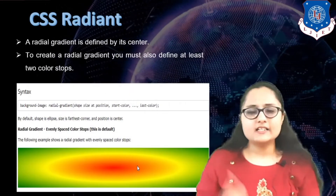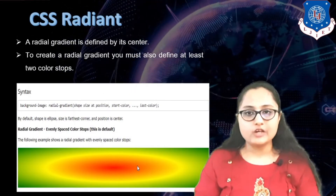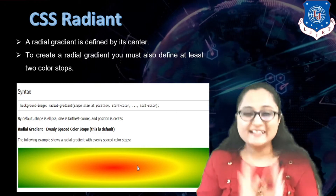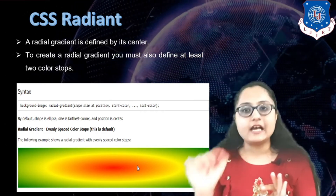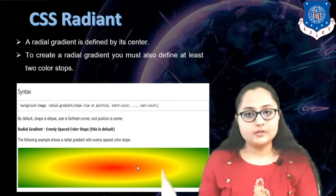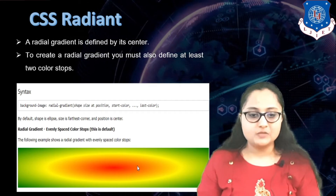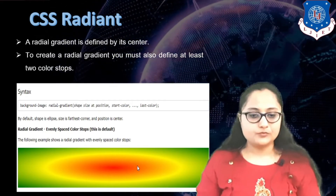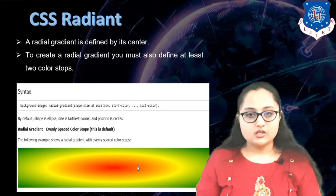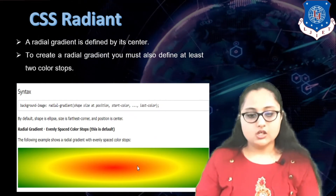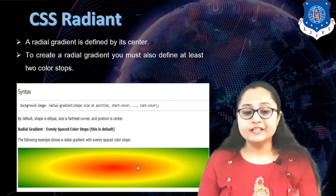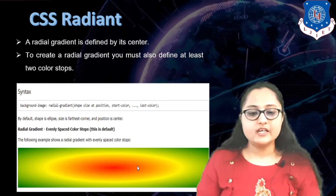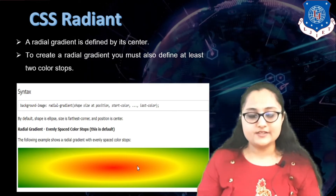Here you can see the syntax. The property name is background-image. Instead of writing Linear-Gradient inside the property value, it is replaced by Radial-Gradient. Inside that there are multiple parameters you can specify: the first is shape, the second is size, then position, start color, and the last color. By default, the shape is ellipse, size is farthest-corner, and position is center. It will have evenly spaced color stops, but you can specify unevenly spaced color stops as well.